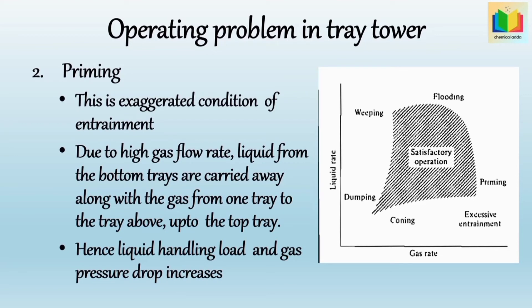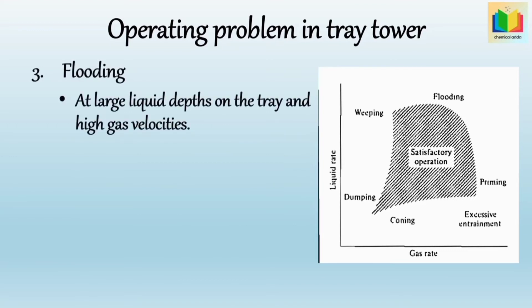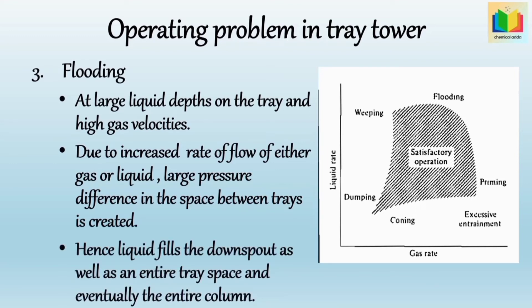The next operating problem is flooding. This occurs at large liquid depth on the tray and high gas velocities. Due to the increased rate of flow of either gas or liquid, a large pressure difference in the space between trays is created. As the pressure difference increases, the liquid level in the downspout will rise, which can permit the liquid to enter the lower tray and the liquid level may reach the tray above. Further increases in flow rate cause liquid to fill the downspout, the entire space between trays, and eventually the entire column — the tower is then flooded and tray efficiency falls to a low value.